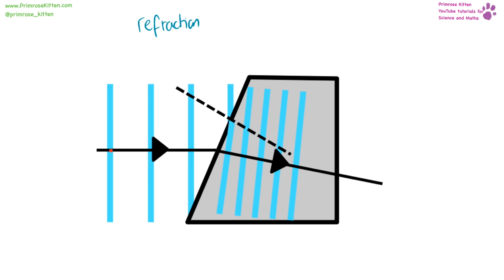Refraction happens when a wave passes from one medium into another medium — say from air into glass or air into water — and it will change direction. Here is our normal line. The wave will change direction as it passes through the boundary, and the reason it changes direction is because the wave changes speed. Different parts of the wave change speed at different points, so the part that hits the boundary first will speed up or slow down before the part of the wave that hasn't yet changed medium.